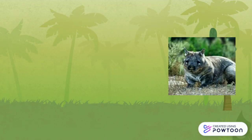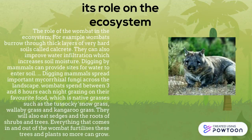The role of the Wombat in the ecosystem. For example, Wombats burrow through thick layers of very hard soils called Calcrete. They can also improve water infiltration which increases soil moisture. Wombats spend between 3 to 8 hours each night grazing on their favourite food, which is native grasses. Everything that comes in and out of the Wombat fertilises these trees and plants so more can grow.